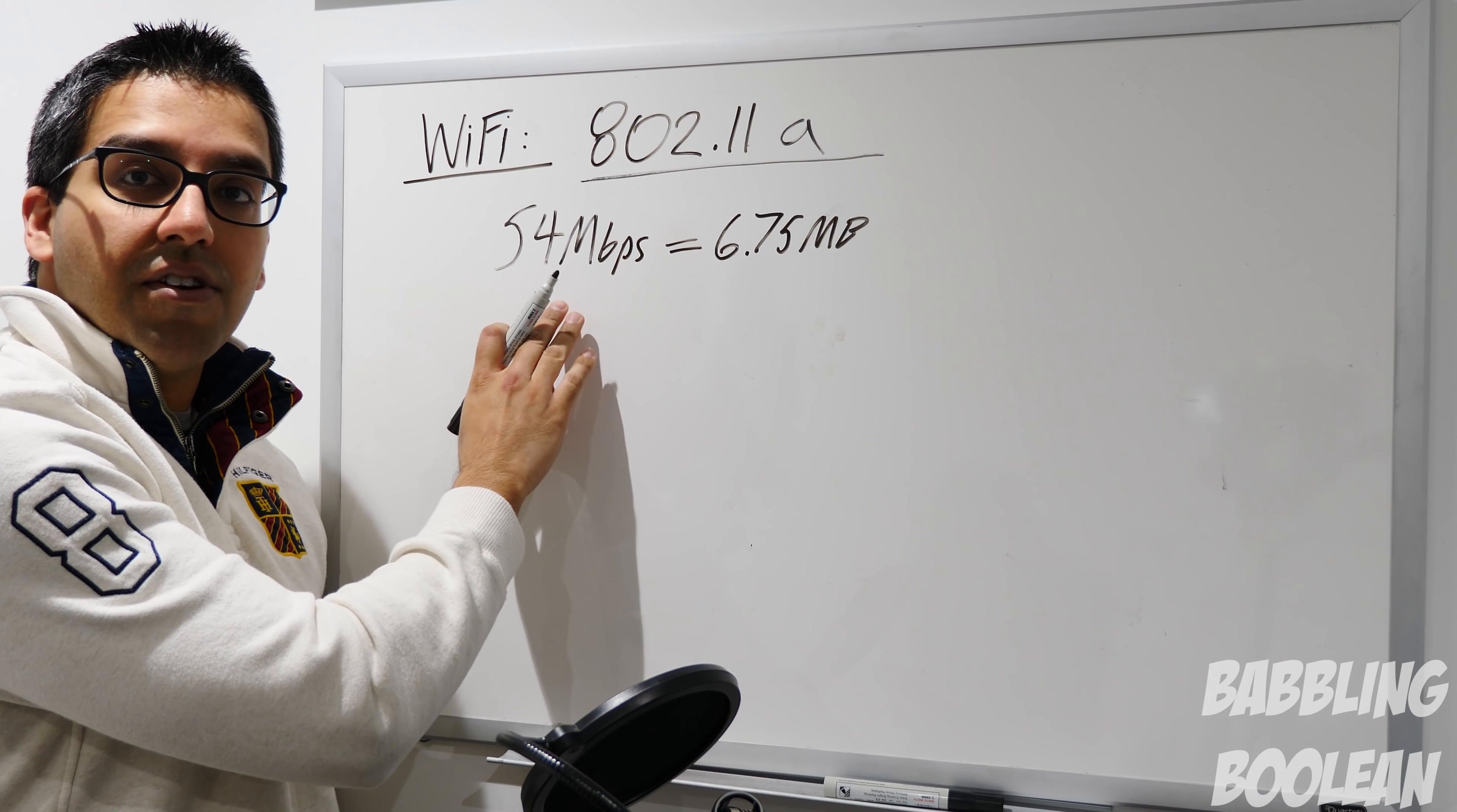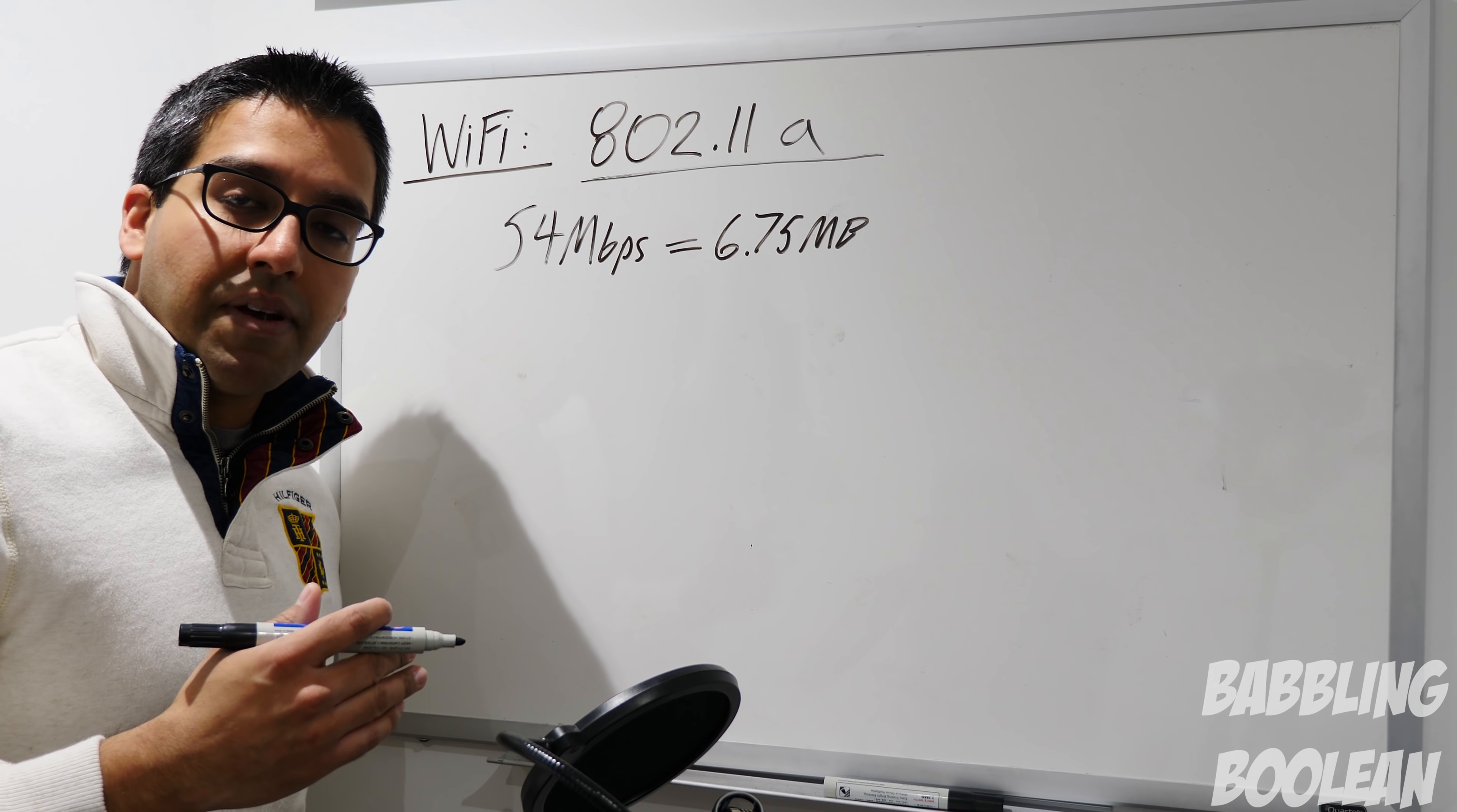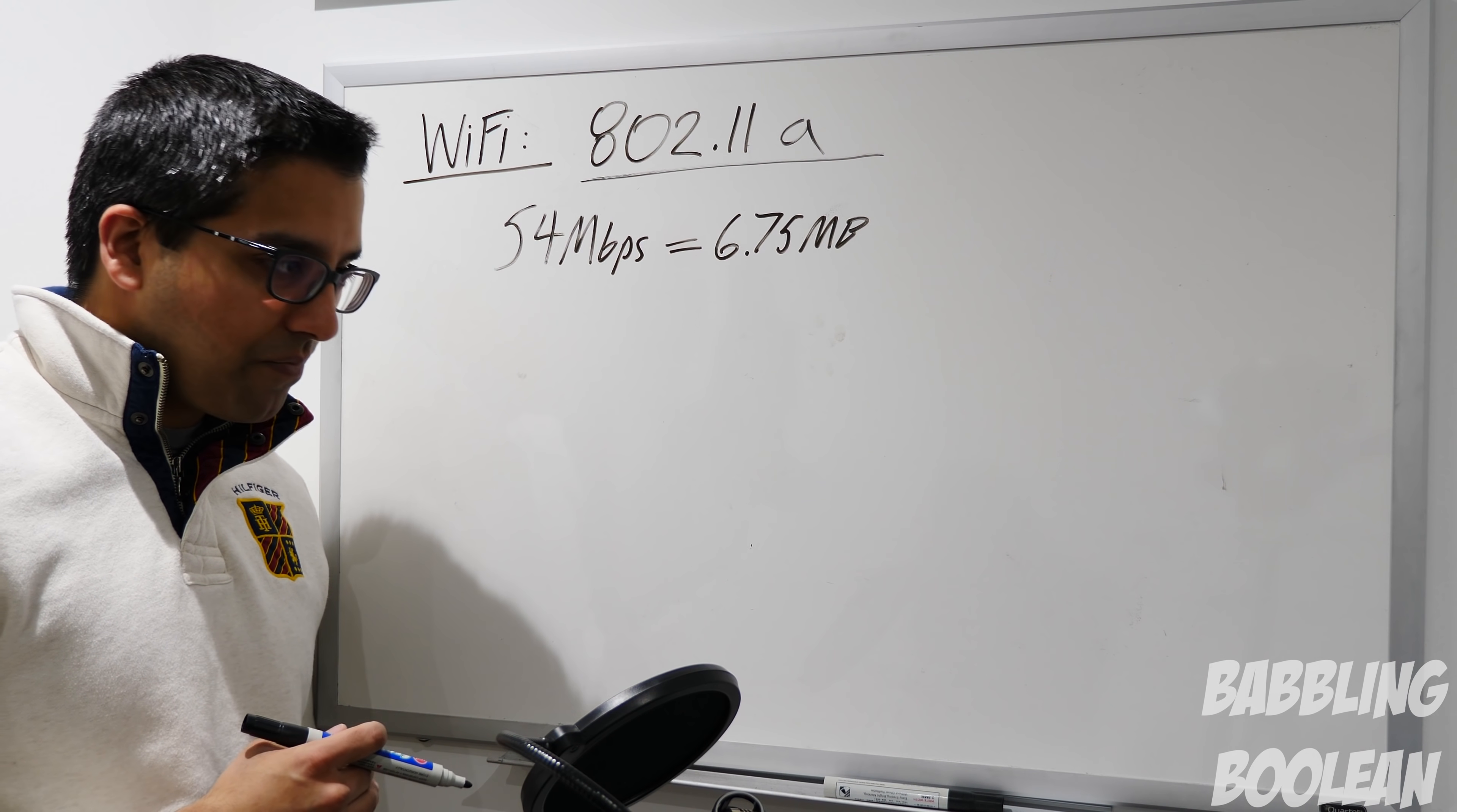802.11a had theoretical speeds of 54 megabits per second. Remember, that's not how fast you actually see on a Windows file share when copying. That actually converts into 6.75 megabytes per second. Throughout this video I'll be mentioning theoretical speeds, which is theoretical based on the industry standard and what manufacturers are deploying and selling. It doesn't mean you actually get even close to the speeds I'm listing here.